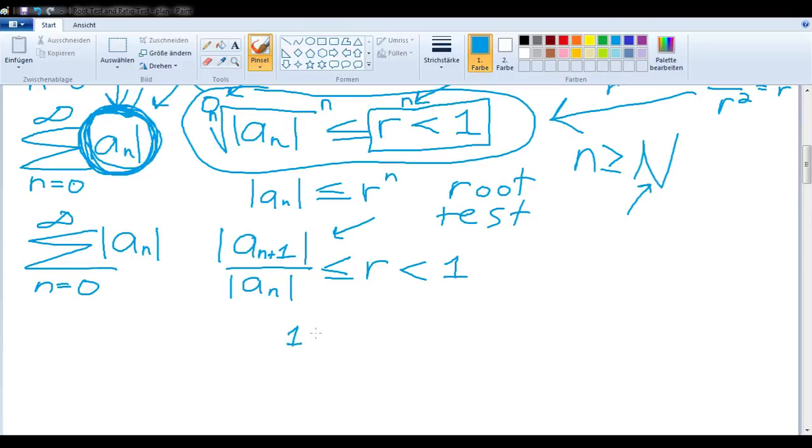So if we have, let's say this series, 1 plus 1/3 plus 1/9 plus 1/27 plus maybe 1/81 etc. We recognize this as a version of the geometric series where the ratio is always 1/3. And since this ratio is less than 1, this will converge.